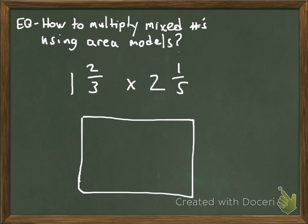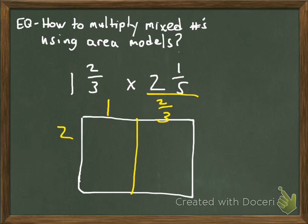I'm going to start by breaking apart the different parts of the first factor, 1 and ⅔. I'm going to take the whole part and place it here, and the fraction part here. Then with the second factor, 2⅕, I break that apart — I place the 2 wholes here and the ⅕ here. Now I'm going to take each part of these factors and multiply them together.